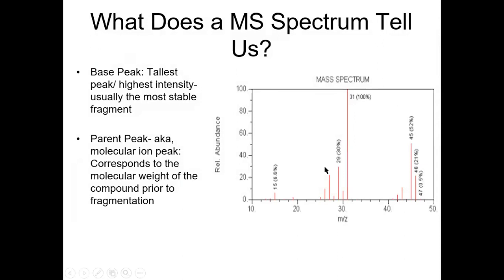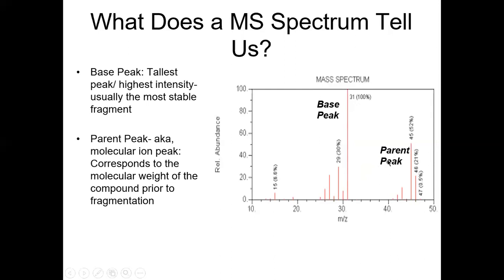In a mass spectrum, the x-axis is mass over charge, and normally the charge is plus one so really it's just mass. The y-axis is relative abundance - how much of that fragment is present. In the spectrum you have your base peak, which is the tallest peak and probably the most stable fragment you create. Then you have the parent peak, which is the mass of the compound. If your compound weighs 100 grams per mole the parent peak shows up at 100 on the x-axis. The parent peak in this spectrum is at 46.